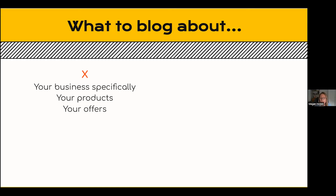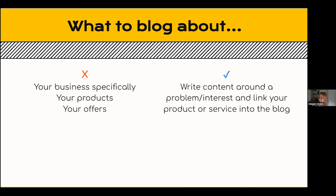Your blog helps people find you, educates them around a problem they have, and brings them into your world through that education. If I write about a software update for a specific product, I have to assume the audience already knows what they're searching for — and if they do, they're likely already a customer. So we want to focus on educational content, writing around a problem or interest and linking the product or service in. Some businesses do blog about company acquisitions or software updates, but you have to ask: is it relevant to my audience?